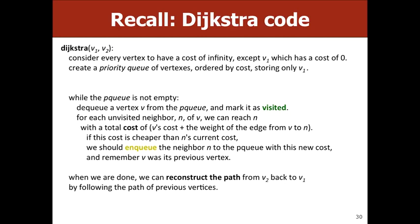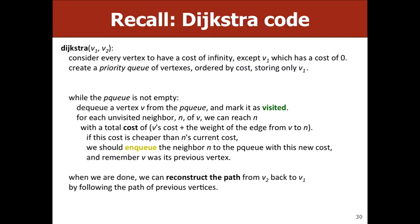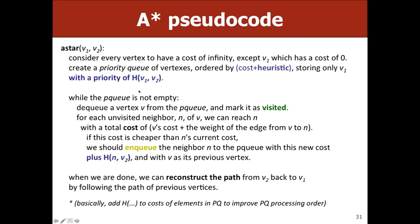Comparing the code: Dijkstra's and A* are very similar. The key difference is that wherever Dijkstra's uses just the cost, A* uses cost plus heuristic. When storing the start node, we include the heuristic. When enqueuing neighbors, we incorporate the heuristic from that node to the end goal. That's the main modification.